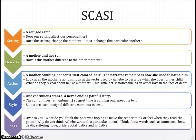The final section is ideas — this is over to you. Why do you think the poet wrote this poem? What do you think he was hoping to make the reader feel or think? You need to think about words such as innocence, loss, death, suffering, love, pride, social justice, and injustice.